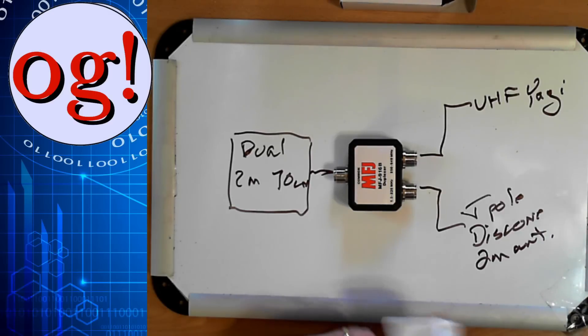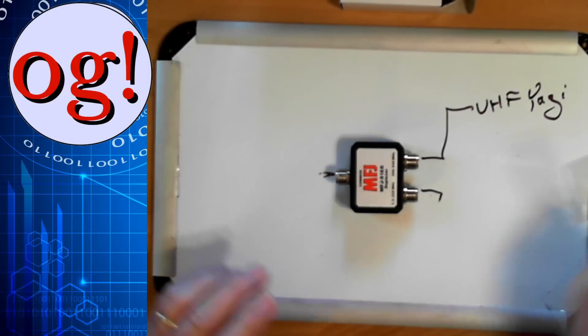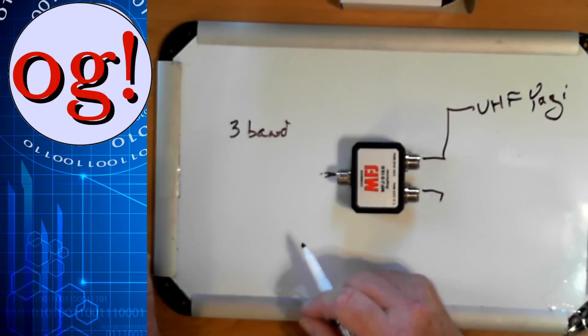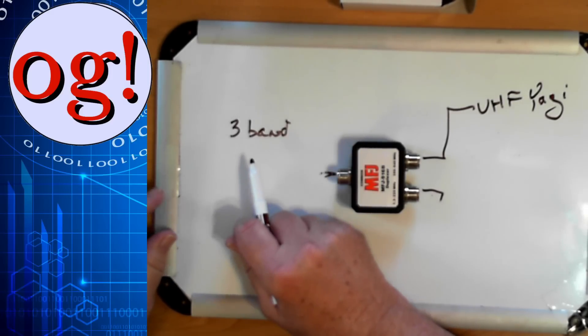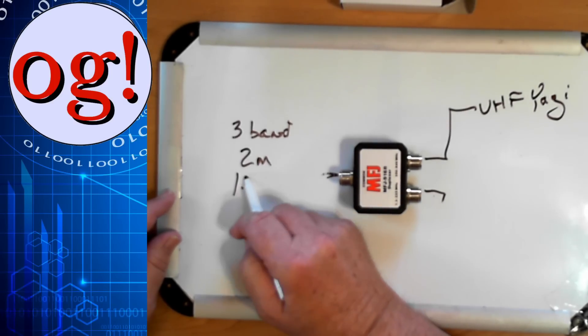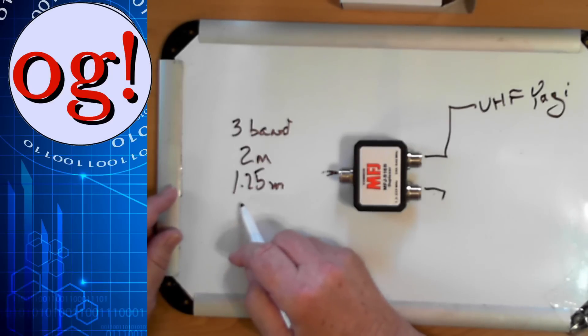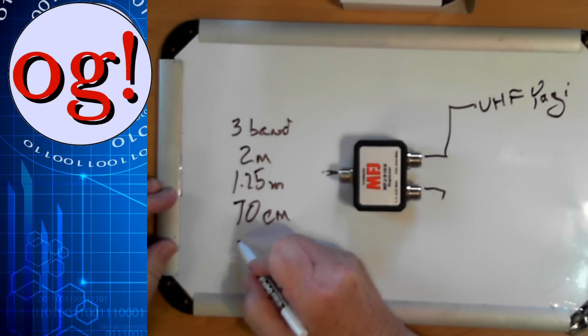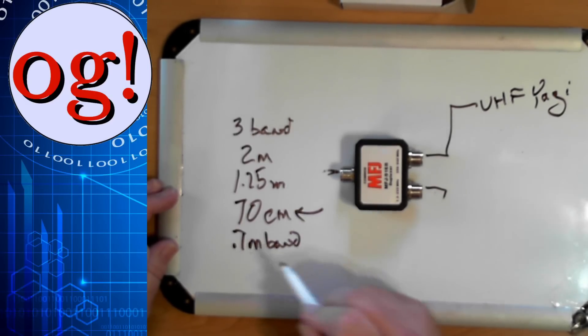Now, here's a little understood thing that we can do. Suppose over here, we have a 3-band radio, like the Anytone AT-D578UVIII+, which I have here in the shack for review. It would be 2 meters and 1.25 meters, which is the 220 to 225 megahertz band. And then it also has 70 centimeters, which of course is the same as the 0.7 meter band. It's generally referred to as 70 centimeter.